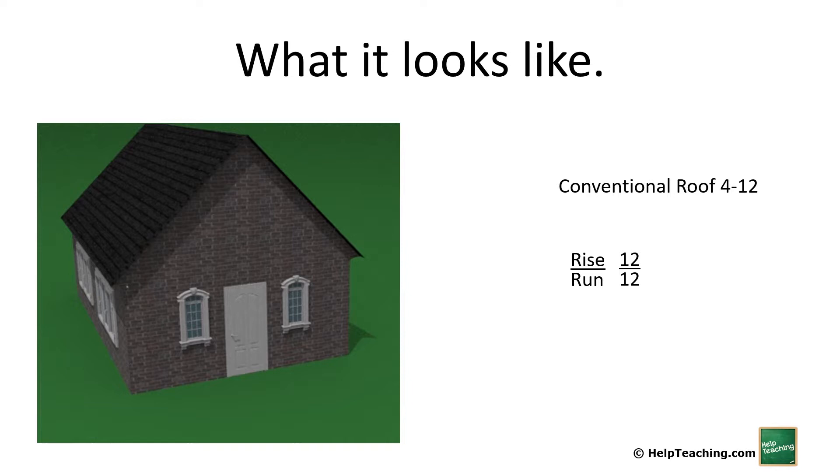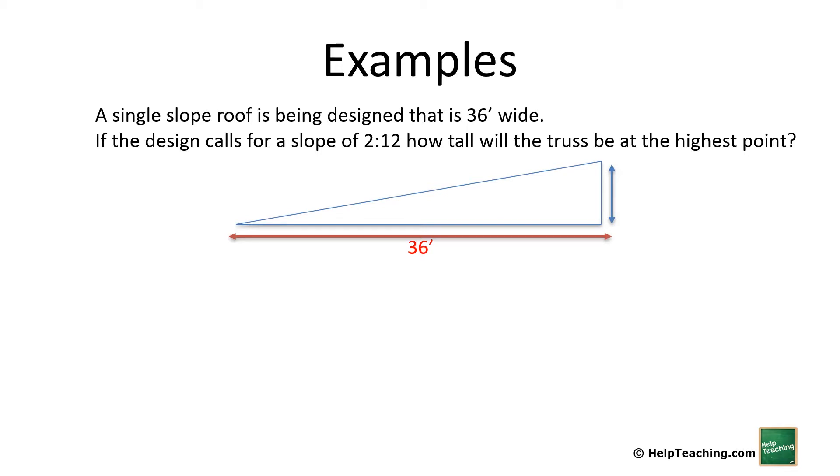Here's an example of a single slope roof which is being designed that is 36 feet wide. If the design calls for a slope of 2:12, how tall will the truss be at the highest point? For this we just use proportional ratios so we would set it up like this: 2/12 is proportional to x/36, because we're just looking for the rise and we know that the run in real life is 36. So the first method we can use is cross multiply and divide: 36 times 2 divided by 12 gives us 6 feet. So we'd have a height of 6 feet.